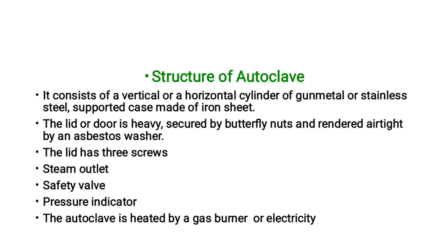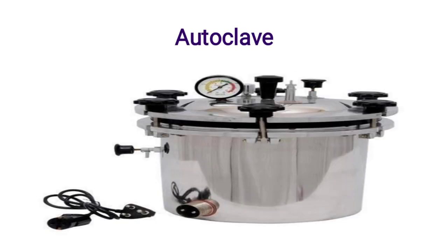The condensate water produces moist conditions for killing microorganisms. The structure of the autoclave consists of a vertical or horizontal stainless steel cylinder. The lid or door is heavy and secured by butterfly nuts, making it airtight with an asbestos washer. The lid has screws, a steam outlet, a safety valve, and a pressure indicator. The autoclave is heated by a gas burner or electricity. This is a picture of an autoclave used in microbiology laboratories.